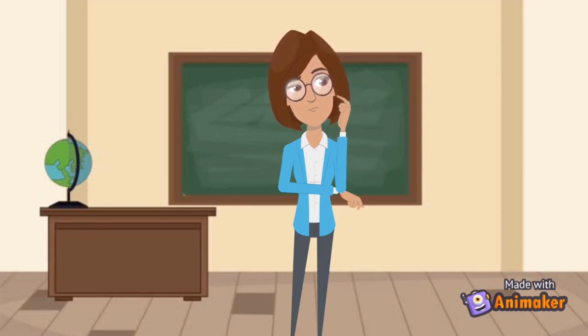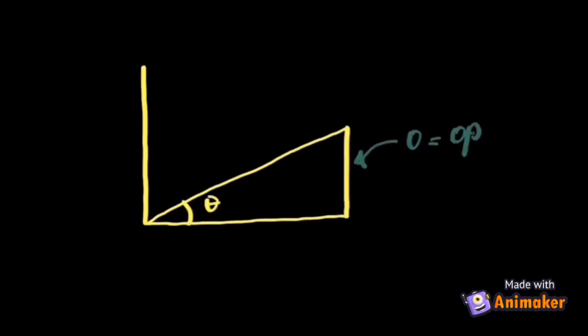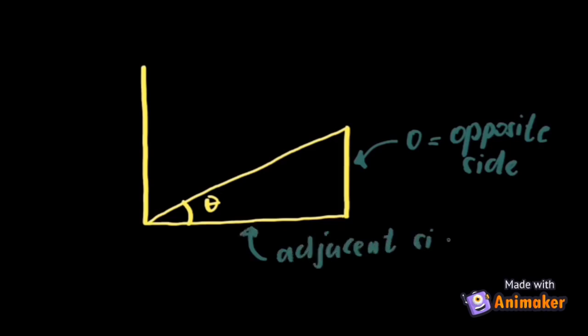But before we specify vectors, let us review some mathematical concepts that are useful to our lesson. In a right triangle, we have an angle. Opposite to it is the opposite side. The side next to it is the adjacent side. And the longest side is what we call the hypotenuse.